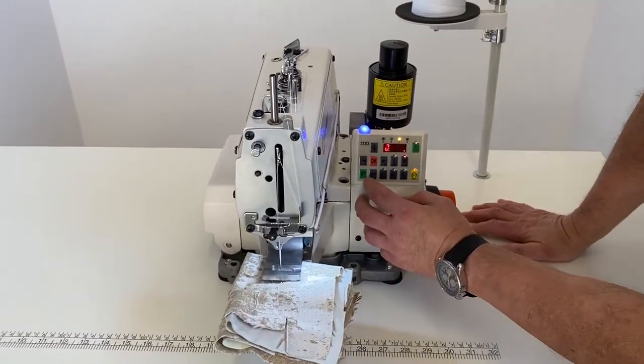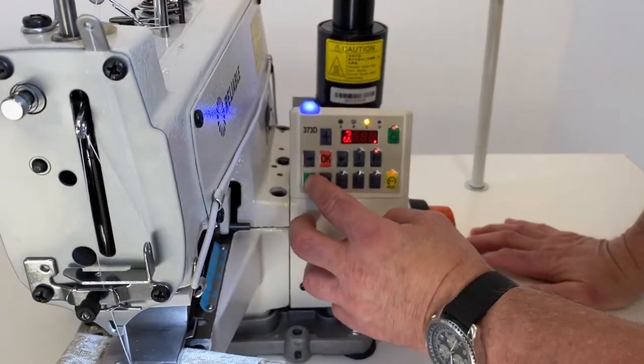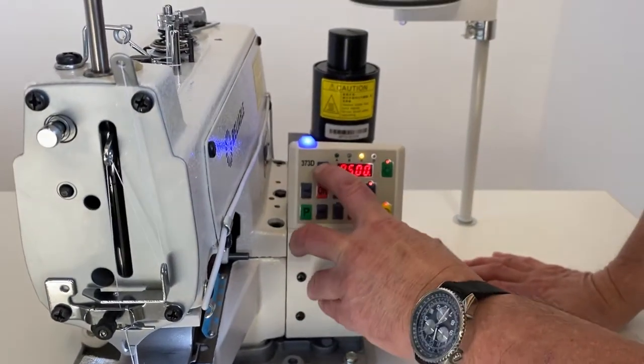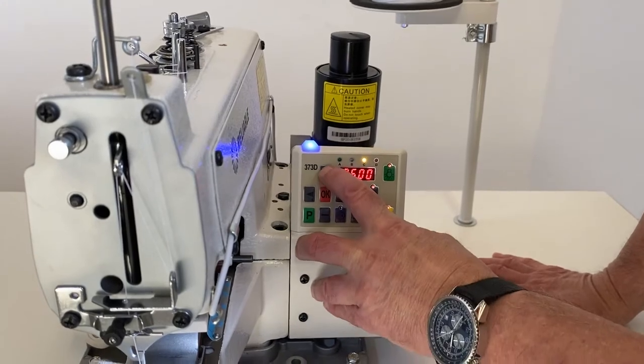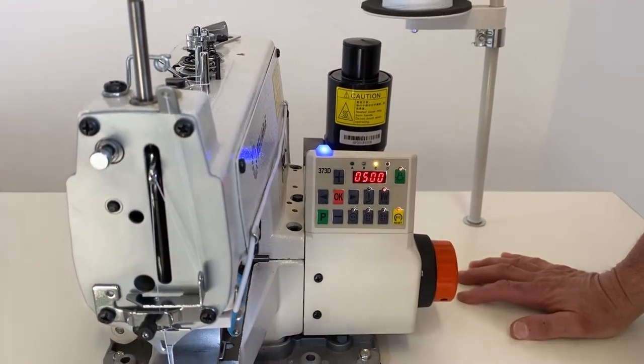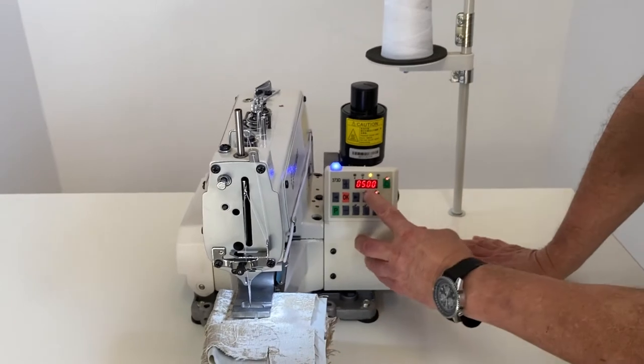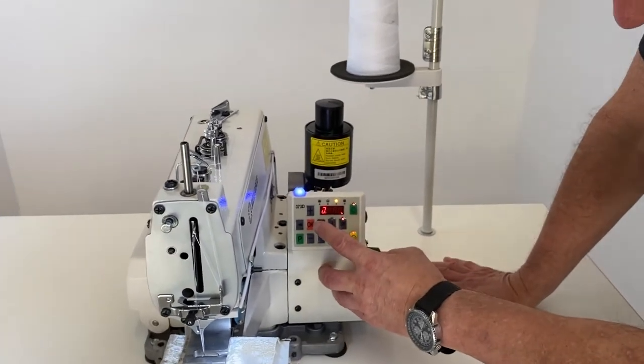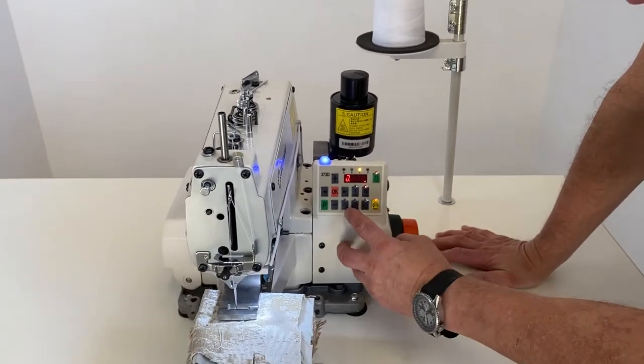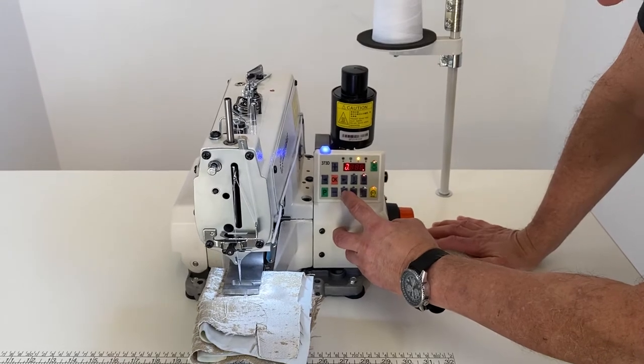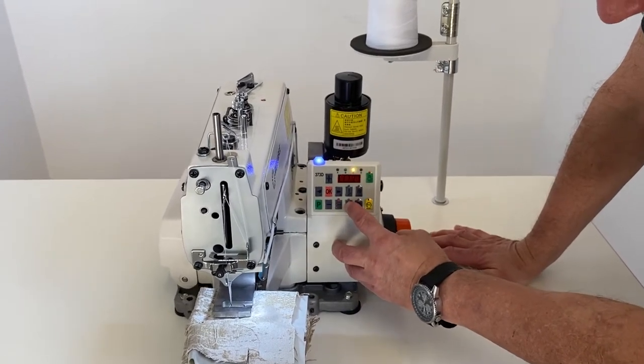Some of the settings on the machine are speed. Press the P once and you can go up and down. For a heavy tack, I set the machine at 500. Now you'll see indicators here of two holes, four holes, and four holes.